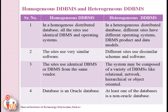Let's start with the first point: the difference between homogeneous and heterogeneous distributed database systems. In a homogeneous distributed database, all the sites use identical database management systems and operating systems. In contrast, in a heterogeneous distributed database, different sites have different operating systems, database management system products, and database data models. The second difference is that in a homogeneous distributed database, the sites use very similar software.